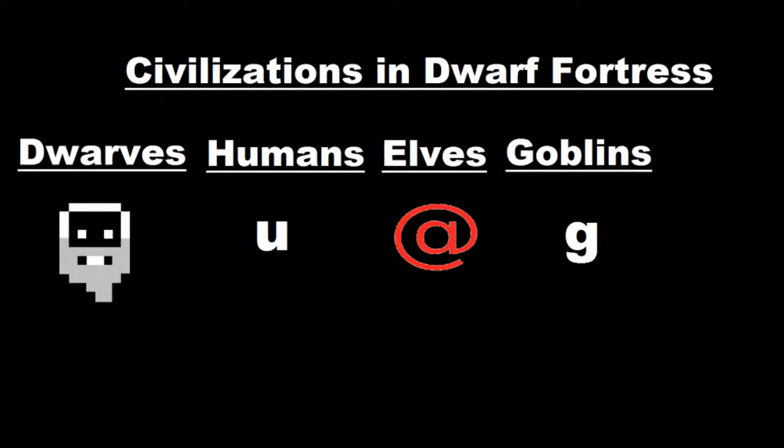There are four civilizations in Dwarf Fortress — at least four playable ones: the Dwarves, the Humans, the Elves, and the Goblins. You may be wondering why there's a U, an at symbol, and a G — those are the symbols for each of the races. In Fortress mode you can only play as Dwarves, but number of civilizations controls how many other strongholds and fortresses are on your map. I recommend going for the middle ground because you still want some civilizations but you don't want a thousand others bothering you.